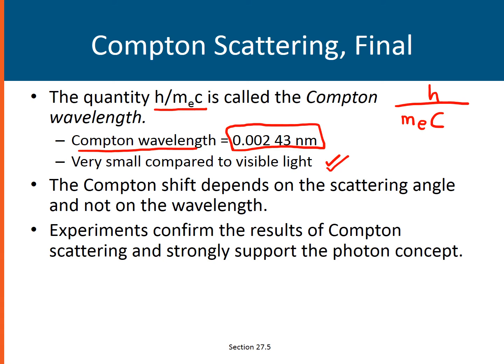The Compton Effect can be observed if the wavelength of the incident photon is very small, which is why x-rays are very appropriate to observe the Compton Effect. The Compton shift depends on the scattering angle theta and not on the wavelength — the wavelength shift is dependent on the angle, not the wavelength. Also, Compton's experiment strongly supports that light is a particle, or the photon concept of light.